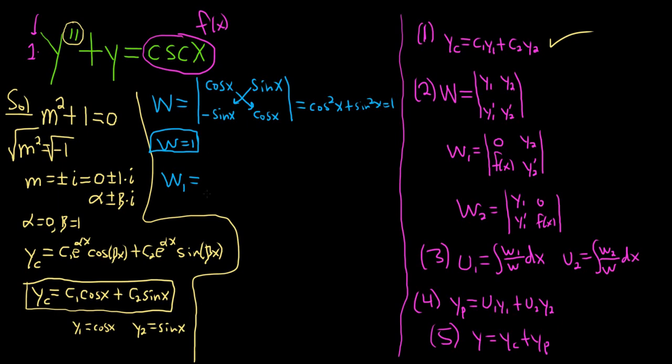W1, okay, so for W1, the trick is you replace the first column, because it's W1, and you replace it with 0 and f(x), so it'll be 0 cosecant x. Then you keep the second column, so sine x, cosine x. Beautiful stuff. So it's equal to, let's see, this times this is going to be 0, minus this times this, so sine times cosecant, which is lovely, right, because that's negative sine times 1 over sine, which is absolutely wonderful, because that's negative 1. So W1 is negative 1. Couldn't ask for a better W1.